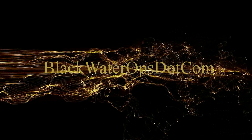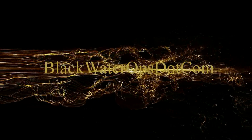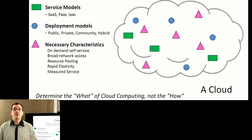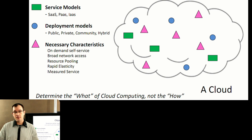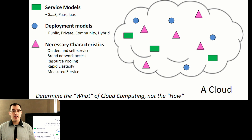The five necessary characteristics of a cloud. To be a cloud, you have to meet five requirements. You have to offer on-demand service, broad network access, rapid elasticity, and measured service.